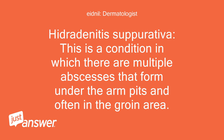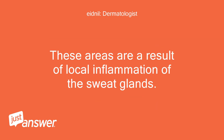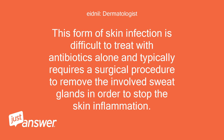Hidradenitis suppurativa — this is a condition in which there are multiple abscesses that form under the armpits and often in the groin area. These areas are a result of local inflammation of the sweat glands. This form of skin infection is difficult to treat with antibiotics alone and typically requires a surgical procedure to remove the involved sweat glands in order to stop the skin inflammation.